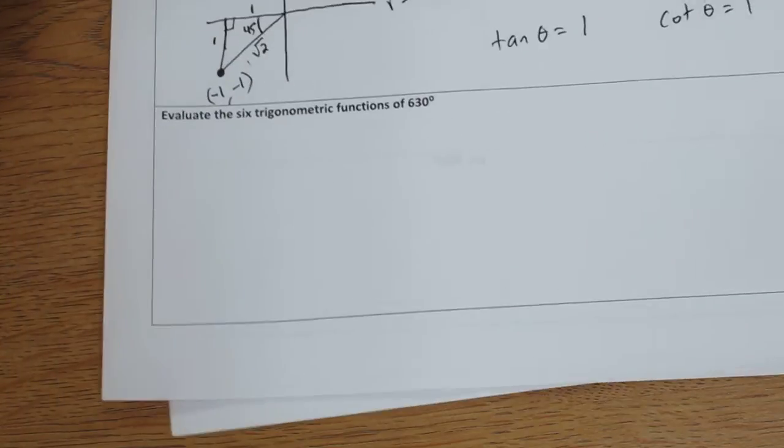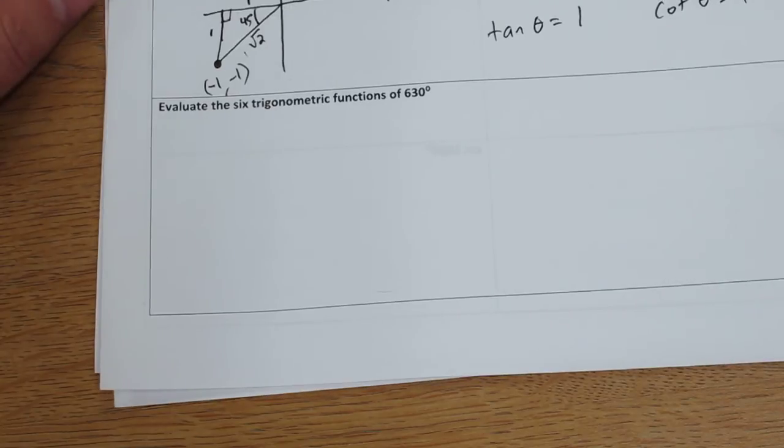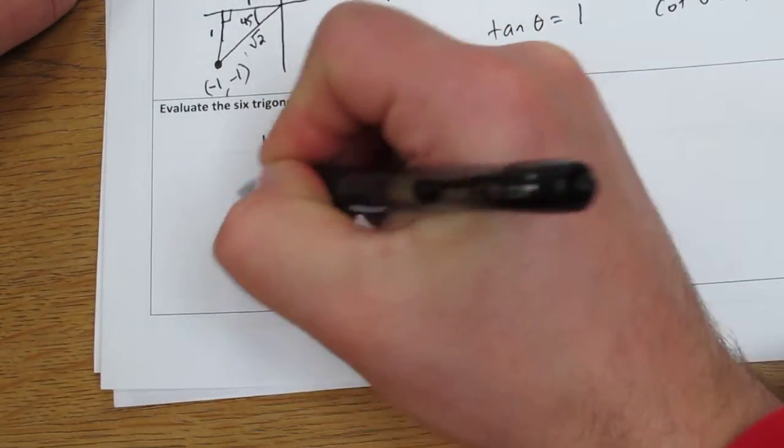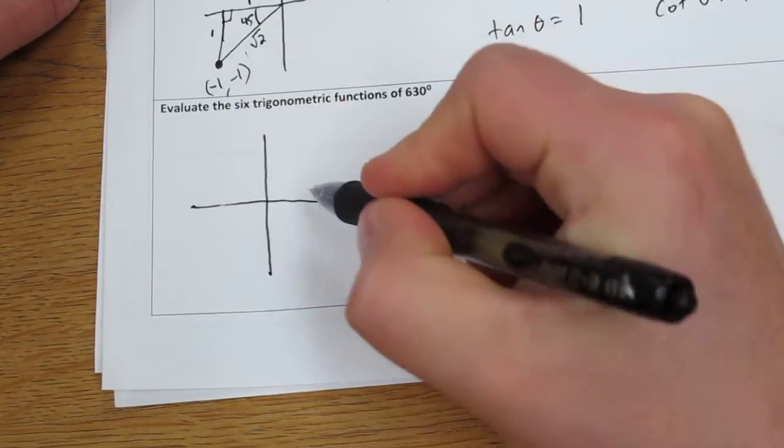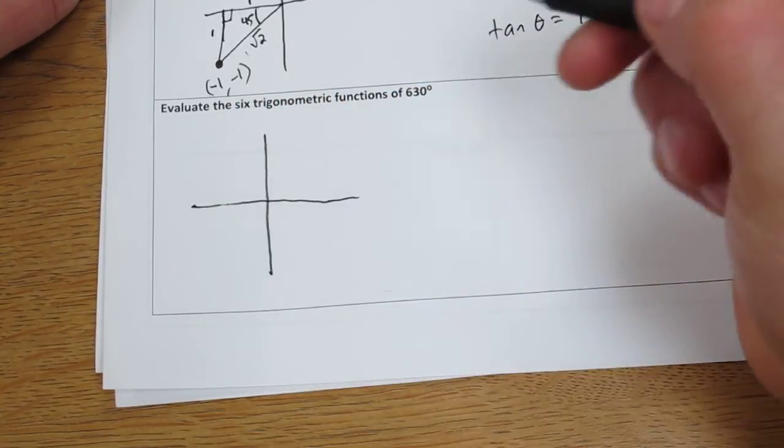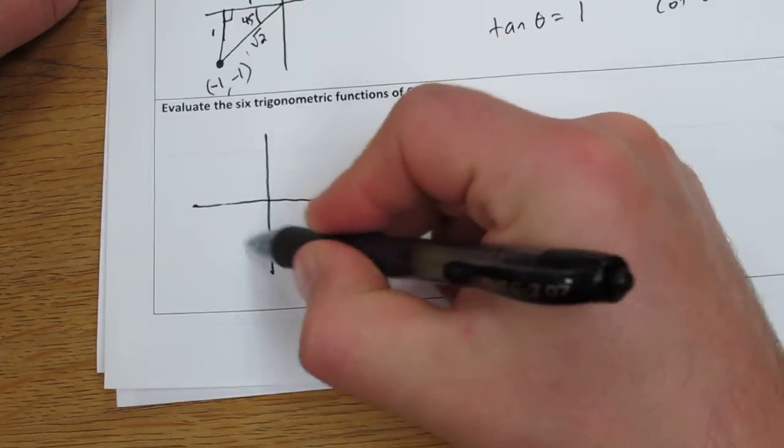On this last one, it's a little bit different. We don't actually have to use a triangle. When we're trying to evaluate 630 degrees, let's start by figuring out where that is. All the way around is 360.